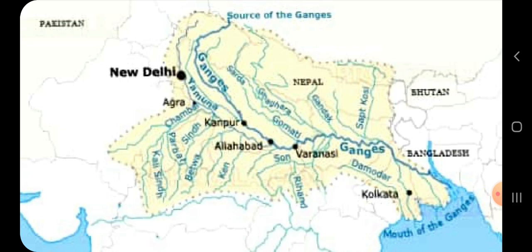The Ganga and the Yamuna are the major rivers in this region. The source of the river Ganga lies in a glacier of the Himalayas called Gangotri. As the glacier melts, the Ganga appears as a small trickle of water. It becomes bigger as it is joined by the rivers Mandakini, Alakananda and other small mountain streams.